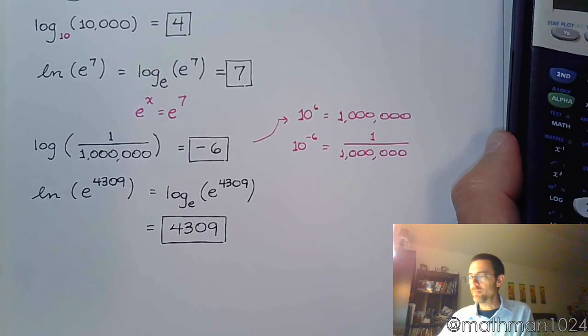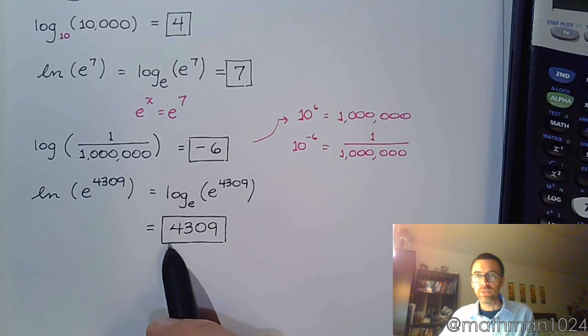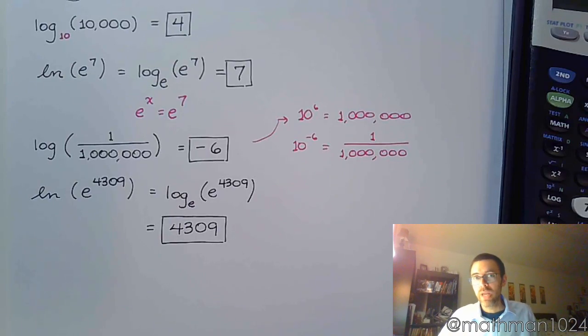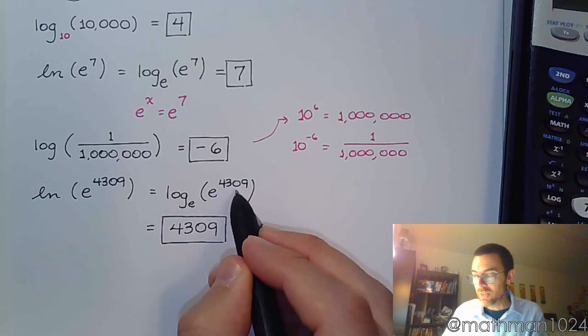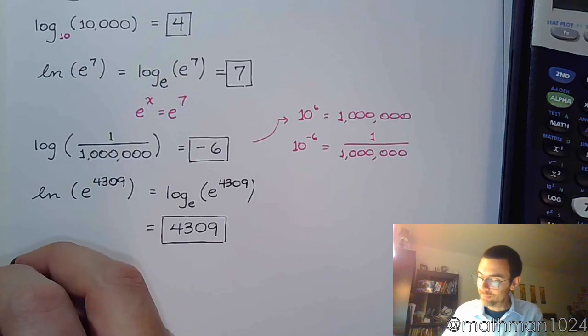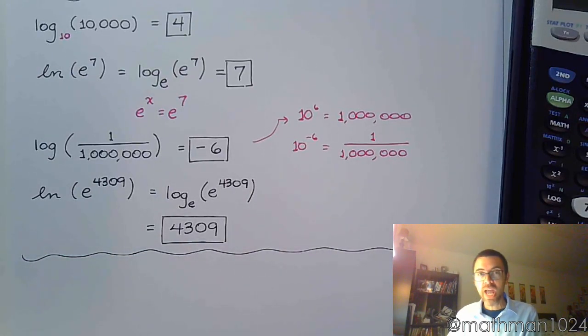I think that's pretty cool that we can do a problem that our calculator, by default, can't do. Because see, it's trying to do it in a different way. But we can use properties of logarithms, and we can understand that since these bases are the same, the answer is just the power. So, yay, we're smart!